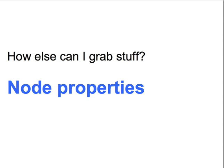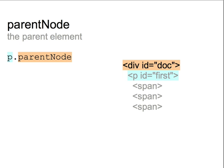We can also use node properties to get nodes near an existing node in the DOM tree. For example, there's the parentNode property, which is a reference to the parent node of a given node. If we have a reference to the paragraph node in blue, parentNode would give us a reference to the div node in orange. parentNode lets us walk up the DOM tree.